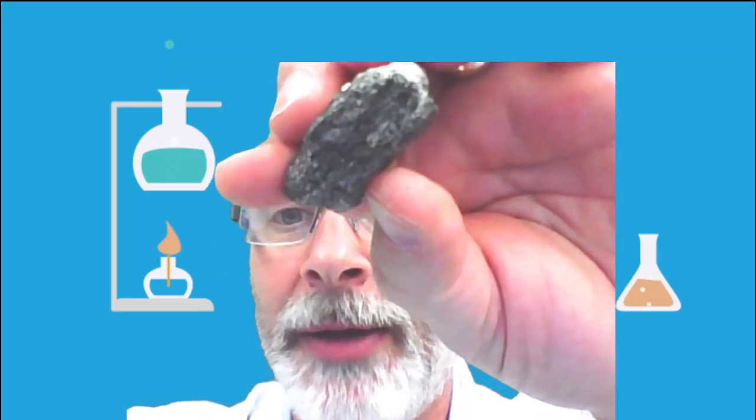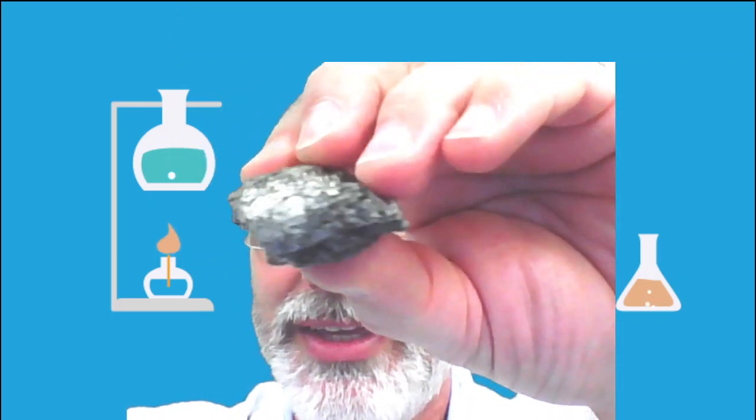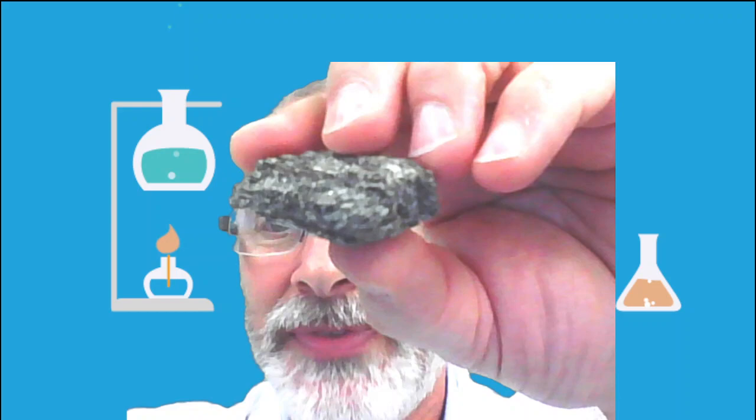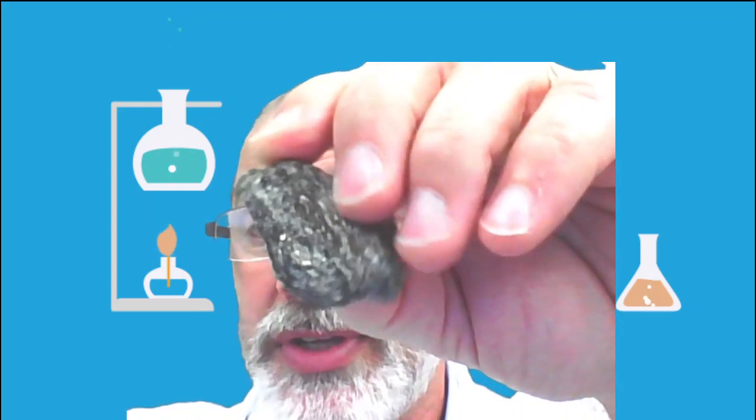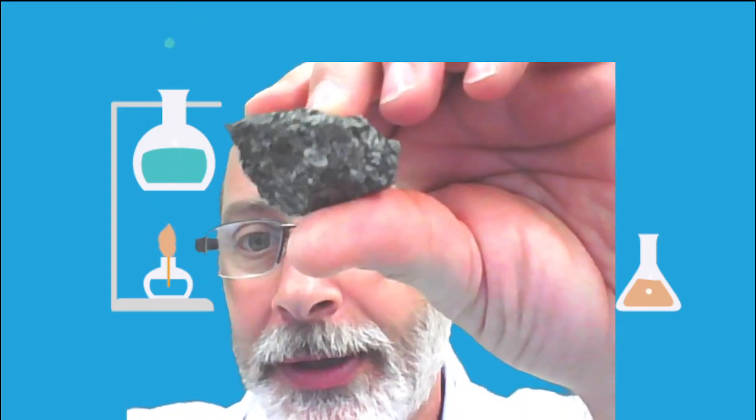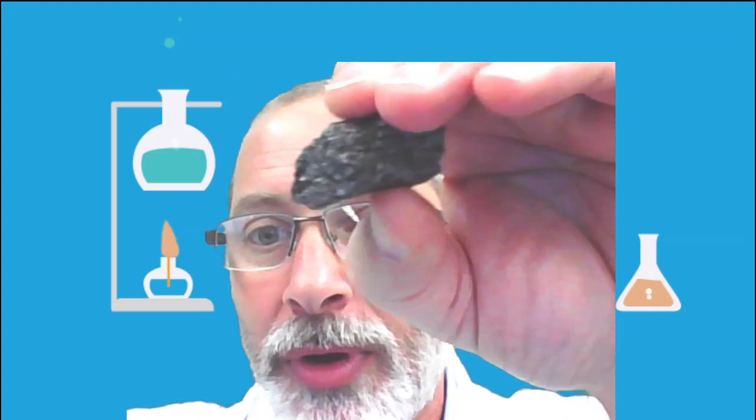Number two, metamorphic rock. Look at the layered bands in this one. It's kind of shiny. All these different layers. I would say this was a foliated metamorphic rock with all of these different layers like leaves on them.